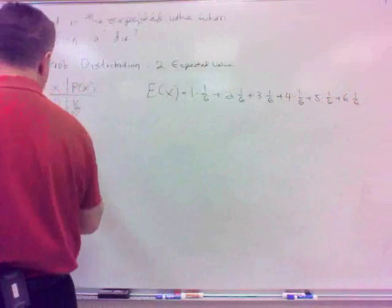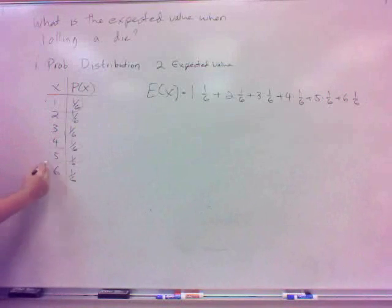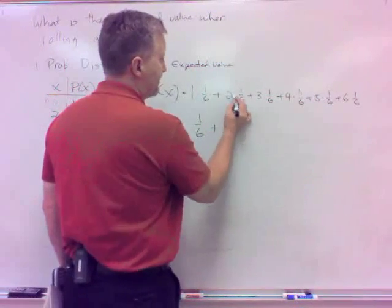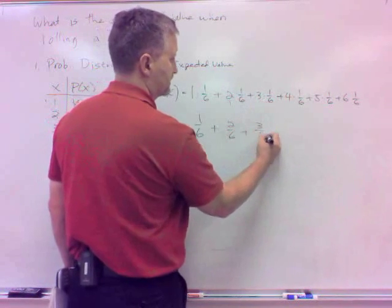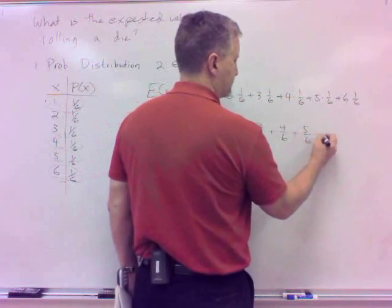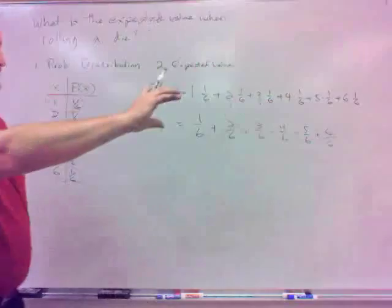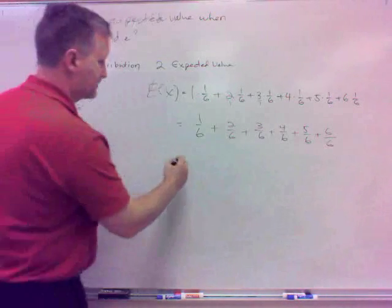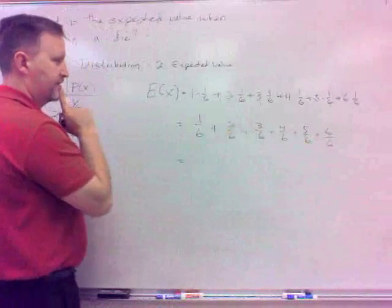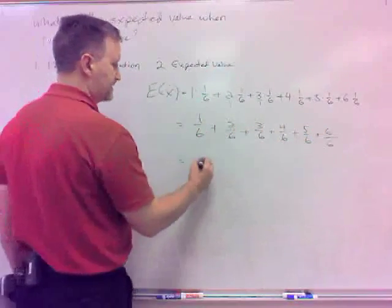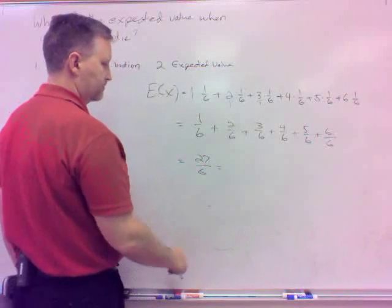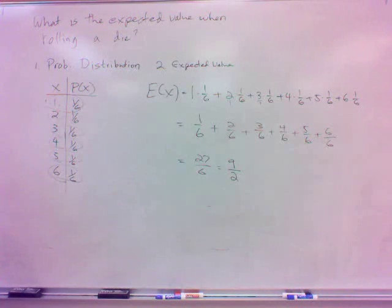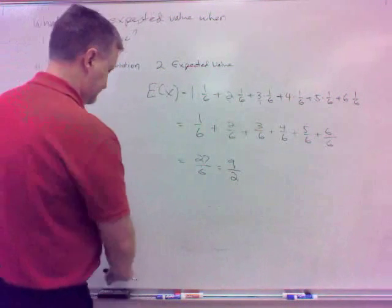Step 2 is to calculate the expected value E(x). You multiply each x by p(x). So: 1 times one-sixth, plus 2 times one-sixth, plus 3 times one-sixth, plus 4 times one-sixth, plus 5 times one-sixth, plus 6 times one-sixth. I'll leave them unreduced — that gives one-sixth, two-sixths, three-sixths, four-sixths, five-sixths, and six-sixths. Now add them all together since they share a common denominator.